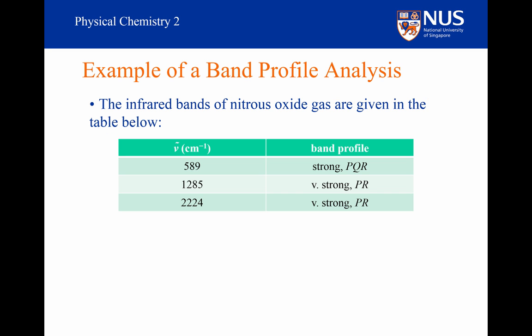Here are the infrared bands of nitrous oxide. There are three bands, and the first has a PQR band structure. The question is, can we work out the structure of nitrous oxide and assign the bands to particular types of vibration? We will assume that we know that nitrous oxide has the formula N2O. However, this could mean that nitrous oxide is NNO or NON. We also have to determine whether it is linear or bent.